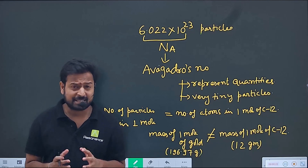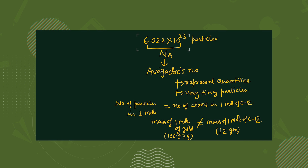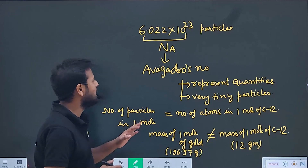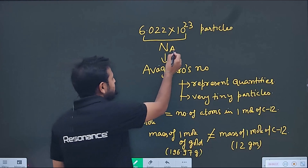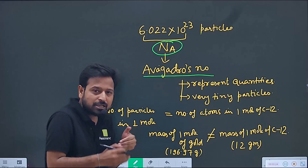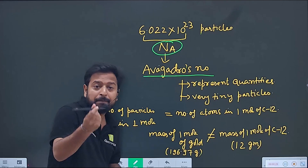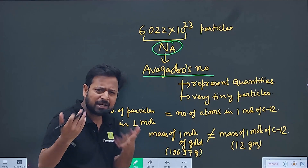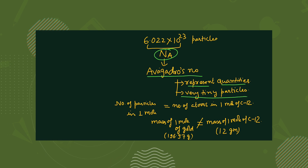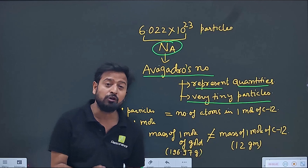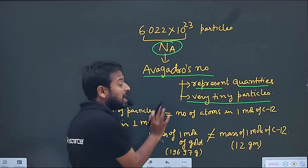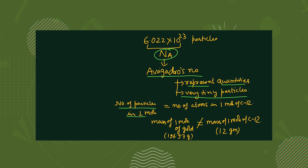As we were discussing, the number 6.022 × 10²³ represents particles — atoms, ions, molecules, anything. It is represented by Nₐ and called Avogadro's number. It is used to represent quantities, whether chairs, pens, atoms, ions, electrons, or protons. It is especially used for representing very tiny particles — for example, if you want to calculate the number of electrons or the number of water molecules in a glass of water, you can get it using Avogadro's number.